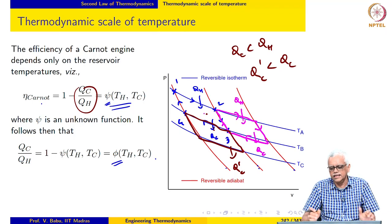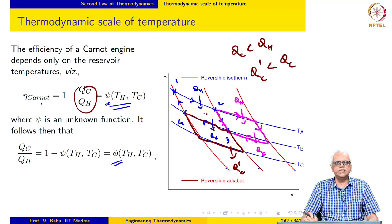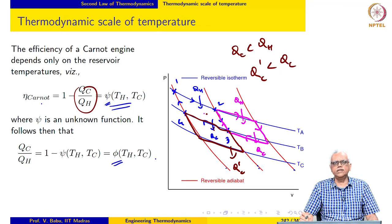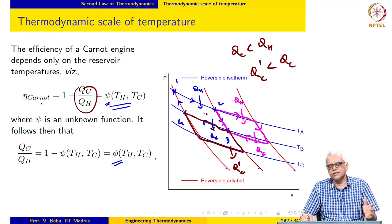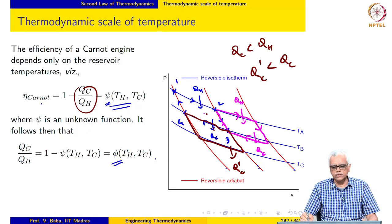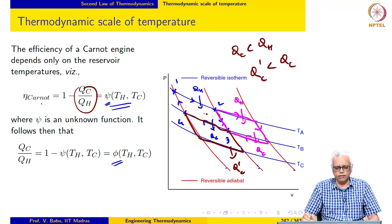Even looking at the cycle directly, you can see there is nothing else that the efficiency can depend on. The only reservoir temperatures are available for us to adjust, so it should be clear that the efficiency depends only on the reservoir temperatures, and this illustration brings it out even more clearly.